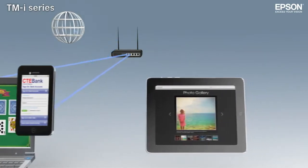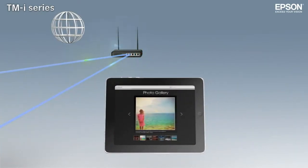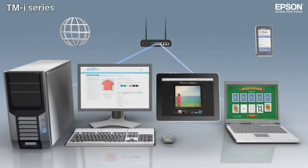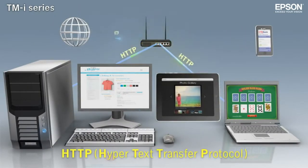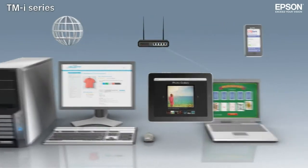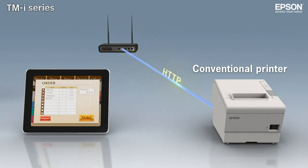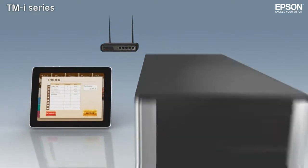Networks are easier to administer because application updates are implemented at the server and delivered automatically to all users. Web applications are controlled via HTTP, the application protocol that underlies data communication on the internet. But conventional POS printers can't understand HTTP commands, making it necessary to use a print server.